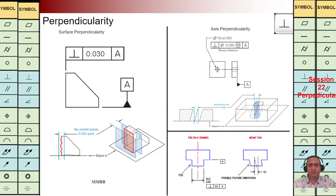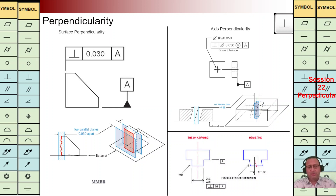Hello everybody, glad to see you today. We're going to talk about perpendicularity. Perpendicularity is a special case of angularity where the angle between two features should be 90 degrees.